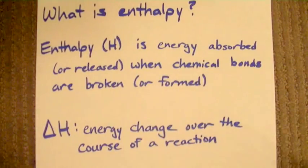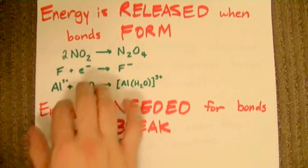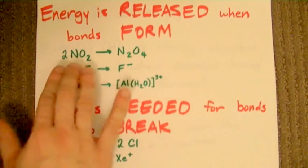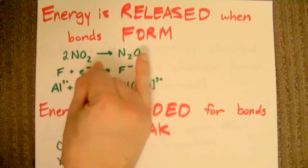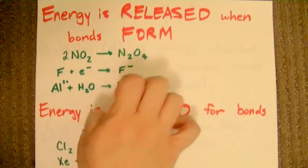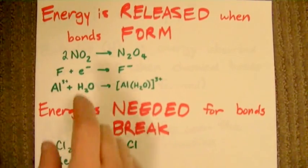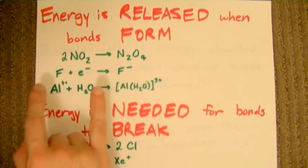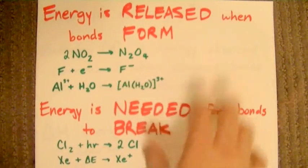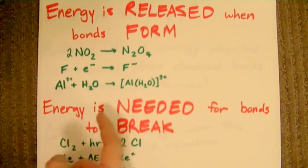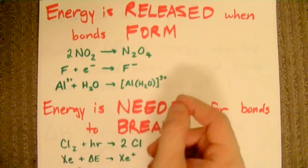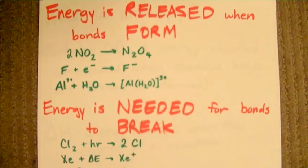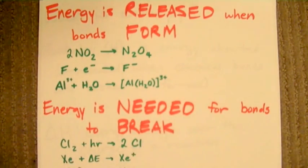There are two things to understand about enthalpy. The first is that energy is released when bonds form. If I have two NO2 molecules and they combine to form an N2O4 molecule, that's two becoming one. There are bonds being made, and energy is released when those bonds are made. The same is true when a fluorine atom combines with an electron to make a fluoride — two become one, and energy is released. An aluminum 3+ ion in aqueous solution will combine with water, forming a complex where aluminum is the central atom and water is a ligand. This process also releases energy, because the aluminum is now connected to the water by whatever bond is made.